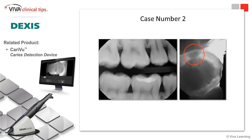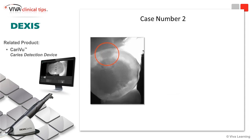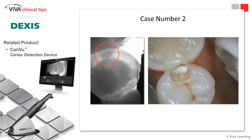On the right-hand side, we have the CarryView picture that shows me where the incipient lesion was — it's revealed the lesion at the DEJ. We've got the CarryView here on the left, and the intraoral camera picture on the right, which shows you the decay. What you see on the CarryView is what you get. It's really impressive.